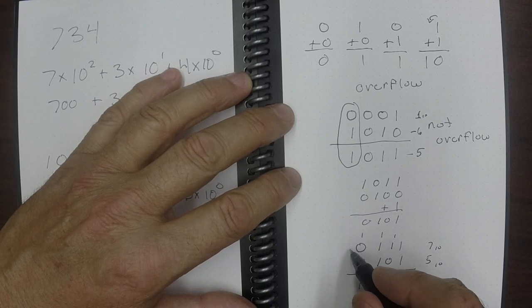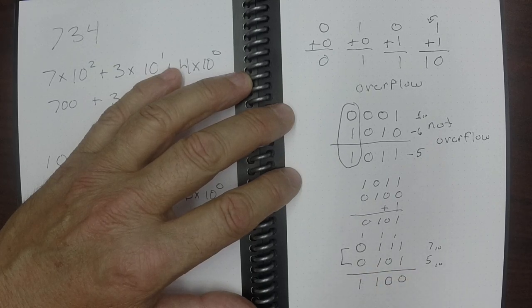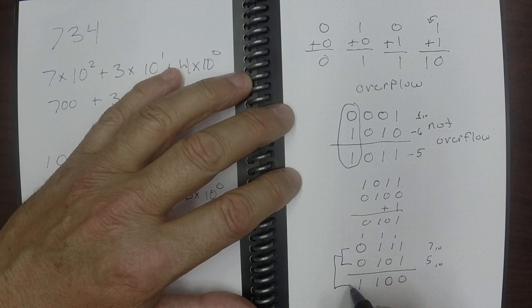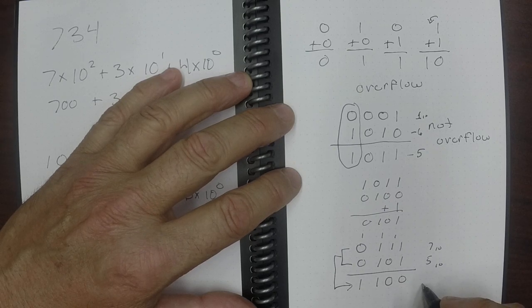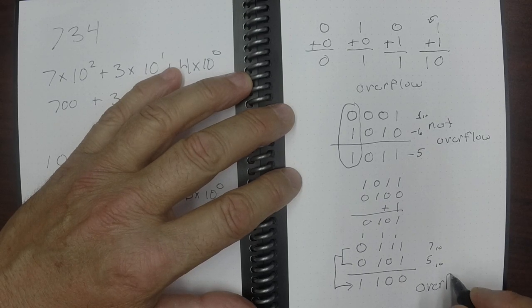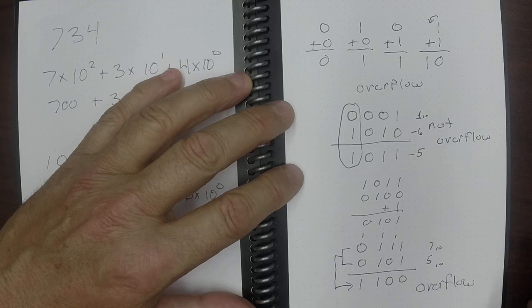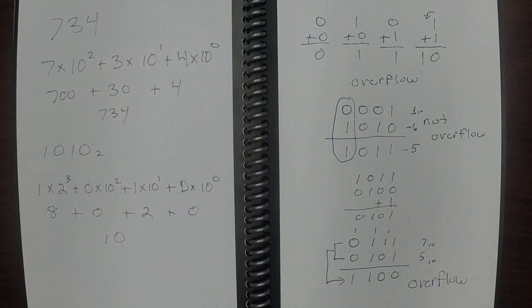So now we see here that the sign bits here were the same and the resulting sign bit has changed. This one is overflow. So that is a brief explanation of binary arithmetic addition and how to calculate whether it's overflow or not. Hope this helps you and look forward to doing the next one.